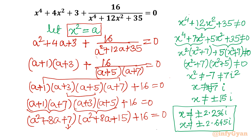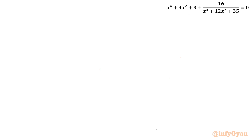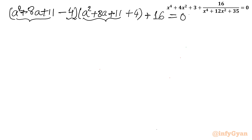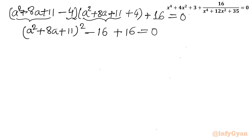I'll write 7 as 11 − 4 and 15 as 11 + 4, so the product becomes (a² + 8a + 11 − 4)(a² + 8a + 11 + 4). This is a difference of two squares. So it equals (a² + 8a + 11)² − 4² = (a² + 8a + 11)² − 16. Adding 16 gives (a² + 8a + 11)² − 16 + 16 = 0, so the 16s cancel.